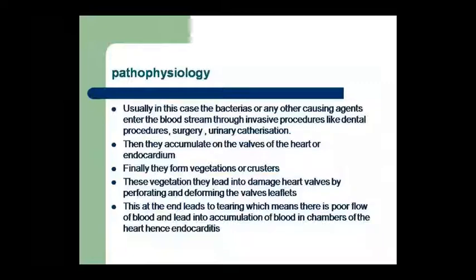The organism then goes through to the heart wall, causing endocarditis. Finally, it creates a vegetation — an outgrowth, which we can also call a crust. This vegetation damages the heart wall and the structure of the valve leaflets.